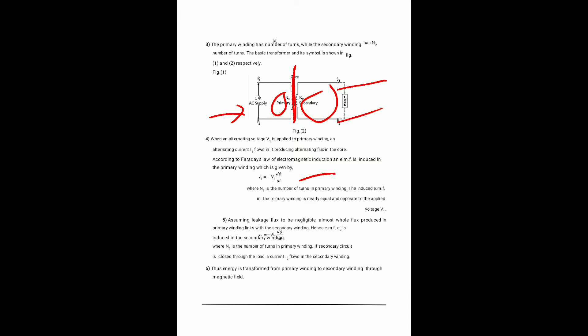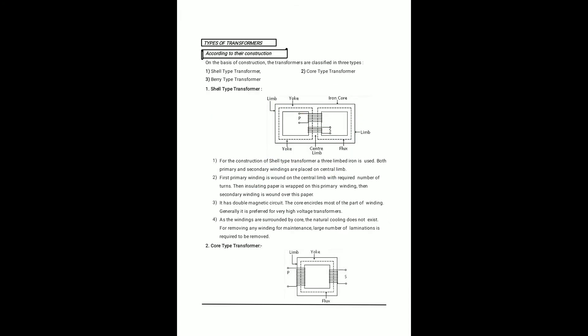The EMF E1 = −N1 dΦ/dt is induced in the primary winding, and E2 = −N2 dΦ/dt is induced in the secondary winding. If the secondary circuit is closed through a load, current I2 flows in the secondary winding, and energy is transformed from the primary to the secondary through the magnetic field.